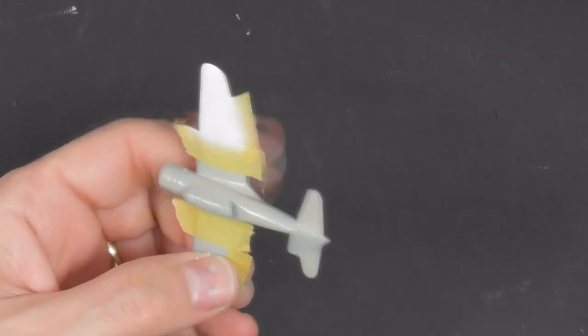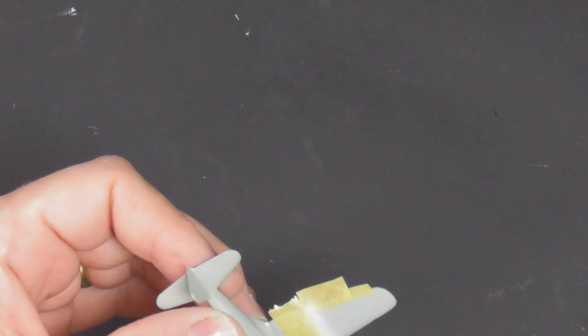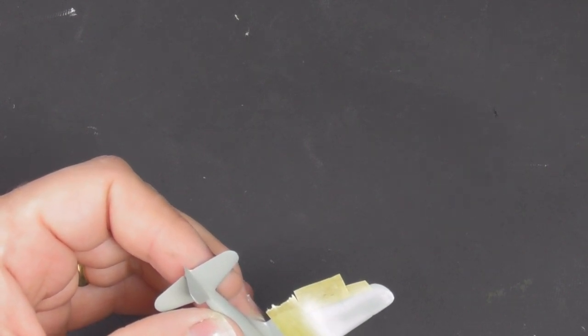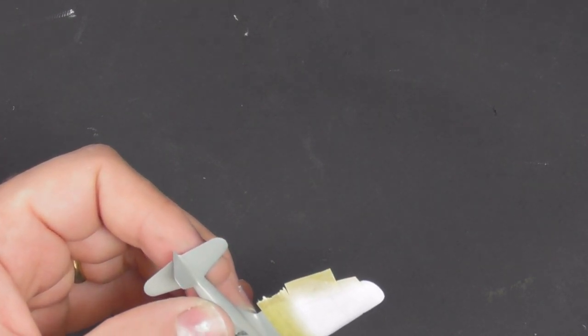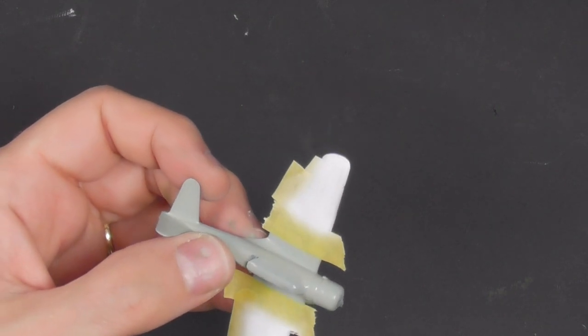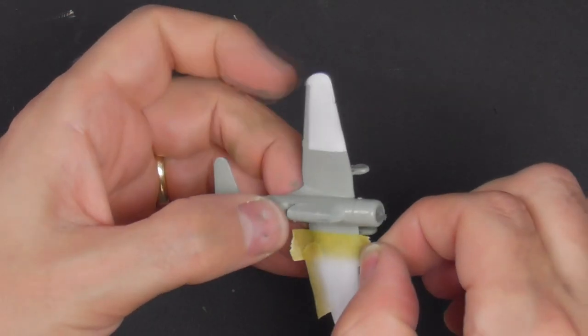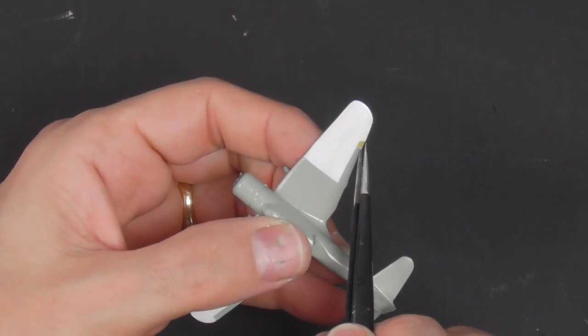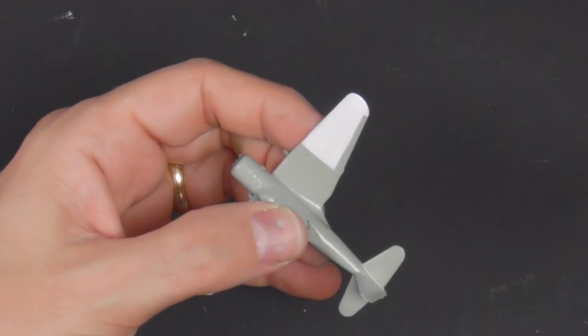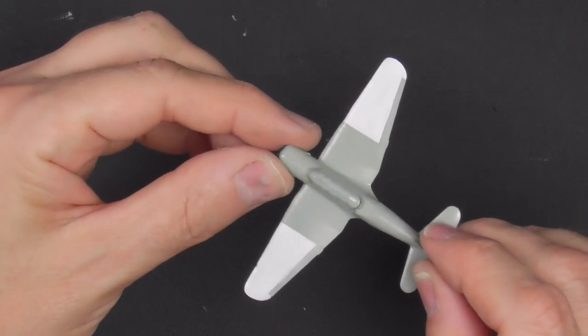So we'll just let that dry and then it came to remove the masking fluid and that looked absolutely terrible. So it was all sanded off. The gray was repainted and I went for the other scheme that was in the box. And actually, I really liked this scheme anyway. So the white areas on the wings were masked and sprayed with MRP white.